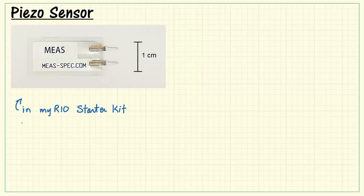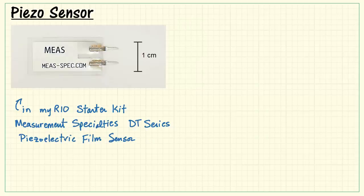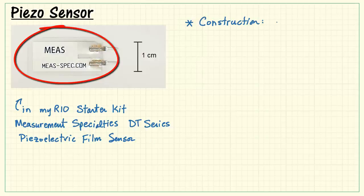Here's the piezo sensor that's included in the MyRio Starter Kit. It's produced by Measurement Specialties, and their DT series sensor is called a piezoelectric film sensor.